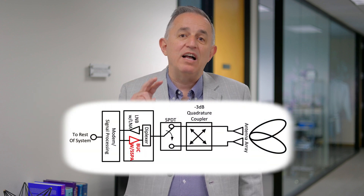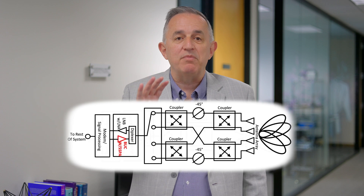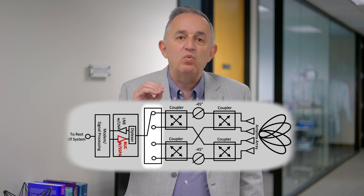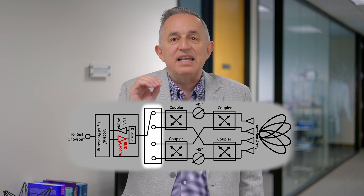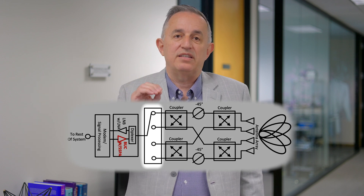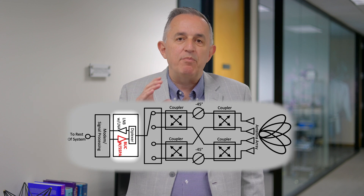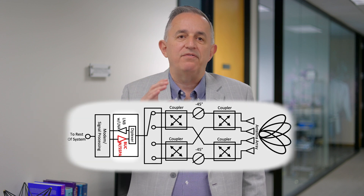Second, another antenna that uses an SSPA is a Butler matrix array. It's a switched beam antenna system that uses couplers and power dividers. The block diagram shows a two-element and a four-element Butler matrix. For the four-element Butler matrix, a switch selects the antenna element that will be connected to the SSPA. The SSPA provides the output power required by the phased array.